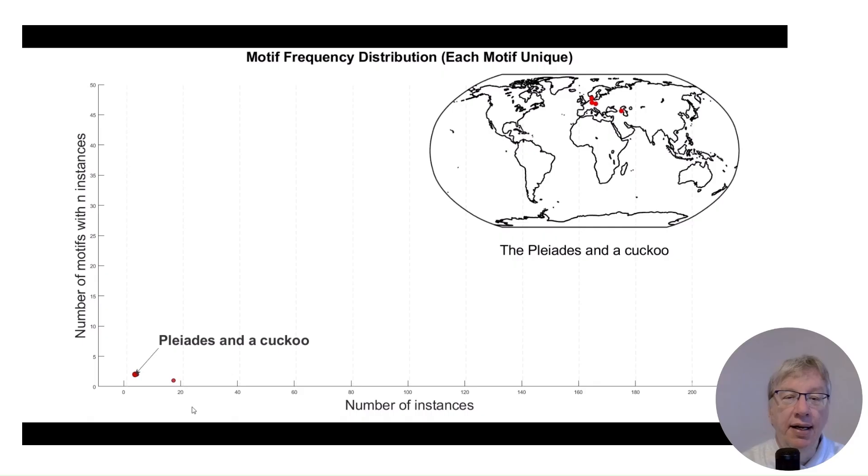Now let's look at the graph. The motif of the Pleiades and the cuckoo appears at one dot in the corresponding bin with four instances. Then we repeat it with the 2,200 other motifs. They are processed similarly and at the end one counts the number of points in each bin.